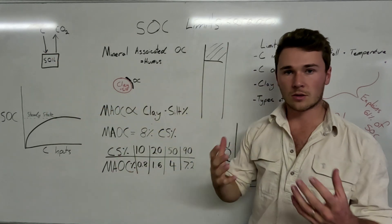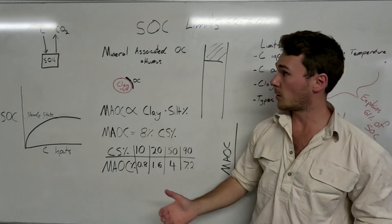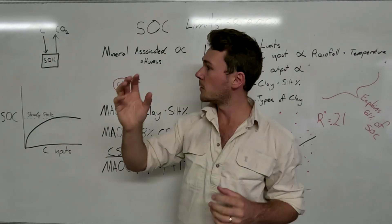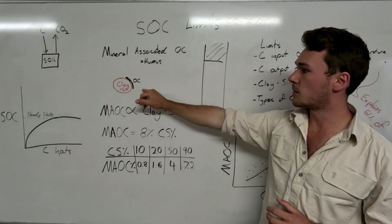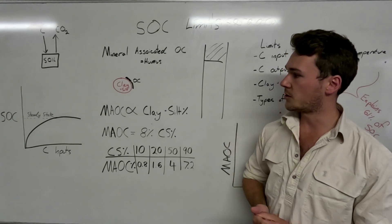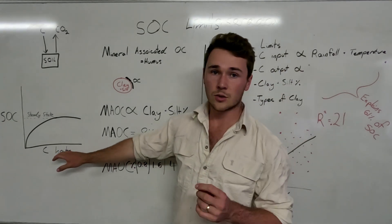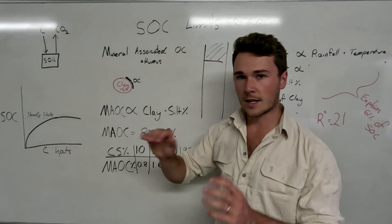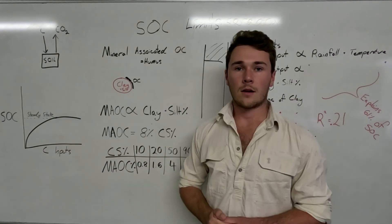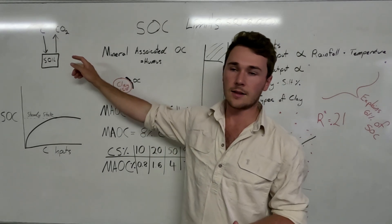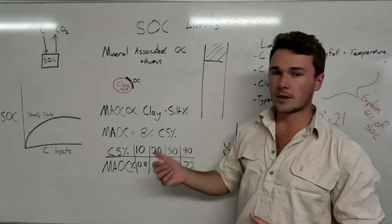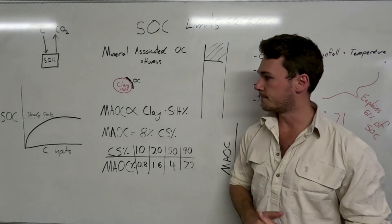Part of that carbon is mineralized by our biology — our microbes — and released as carbon dioxide, so we have a carbon output. Another part is locked away into mineral associated soil organic carbon and is considered safe or unavailable for decomposition. The current understanding is that with increasing soil inputs we get a rapid increase in soil organic carbon, but then it tapers off into a steady state where microbes break down the carbon input at the same rate we're putting it in.